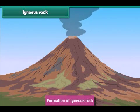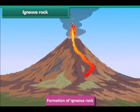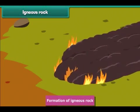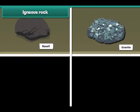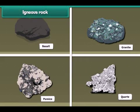Igneous rock is formed when molten rocks like lava in volcanoes cool and get hardened and solidified. It is often shiny and glossy. Basalt, granite, pumice, and quartz are examples of this kind of rock.